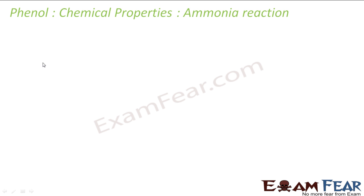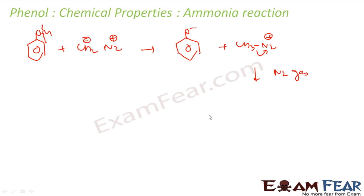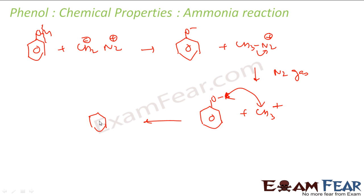Let's take one more important reaction — phenol reacting with diazomethane (CH2N2). What happens is the OH bond breaks, giving O minus and CH3N2 plus. The N2 easily goes off as nitrogen gas, leaving O minus and CH3 plus, which directly react to give OCH3 (methyl phenyl ether).